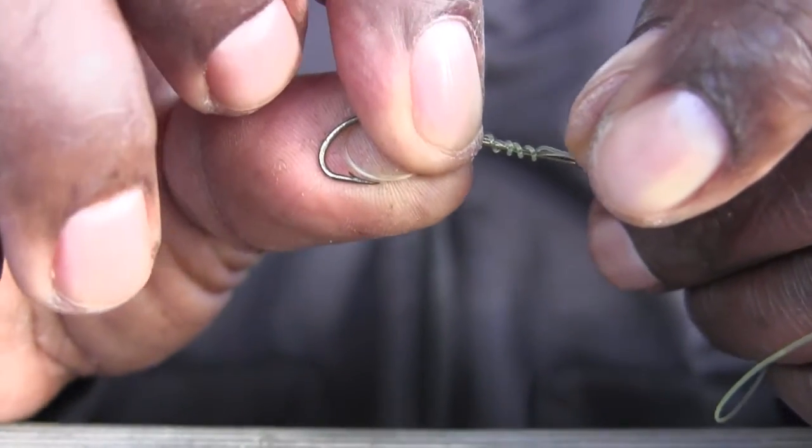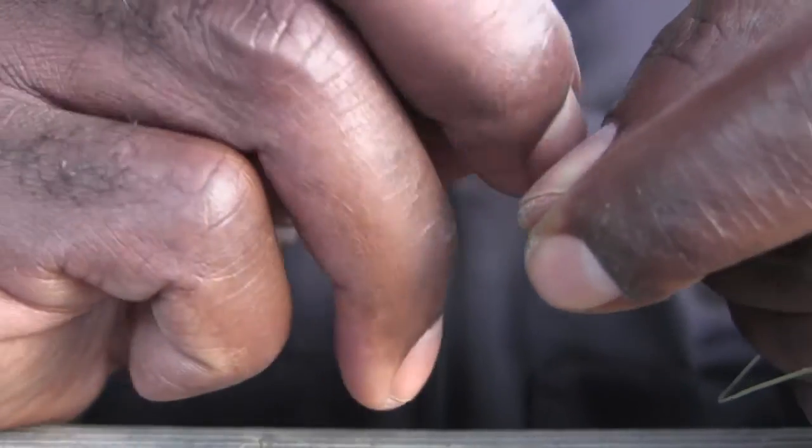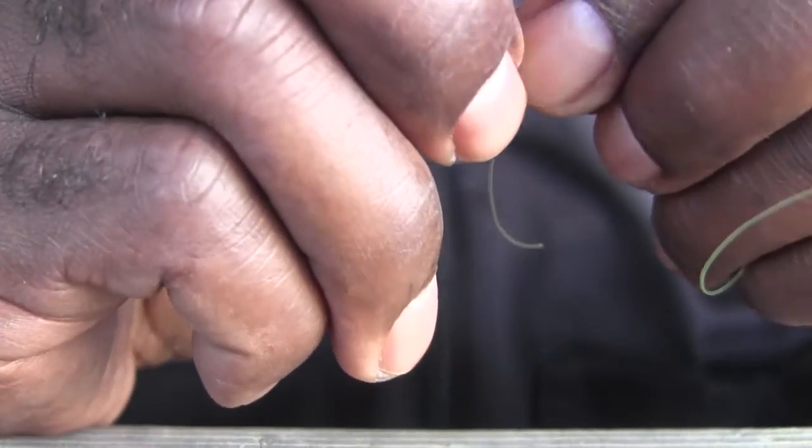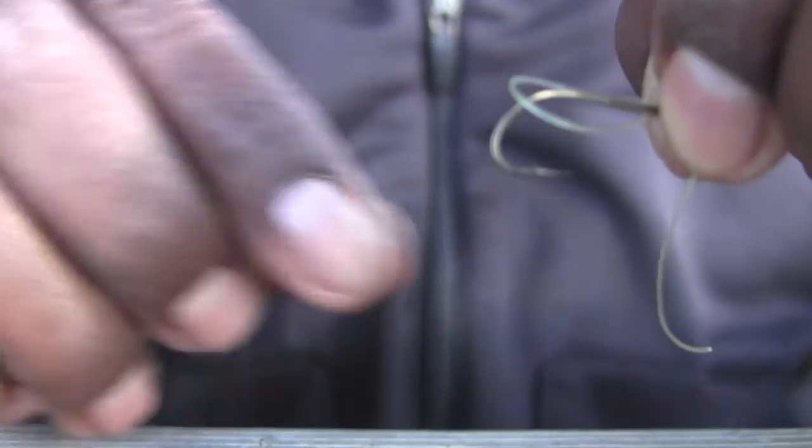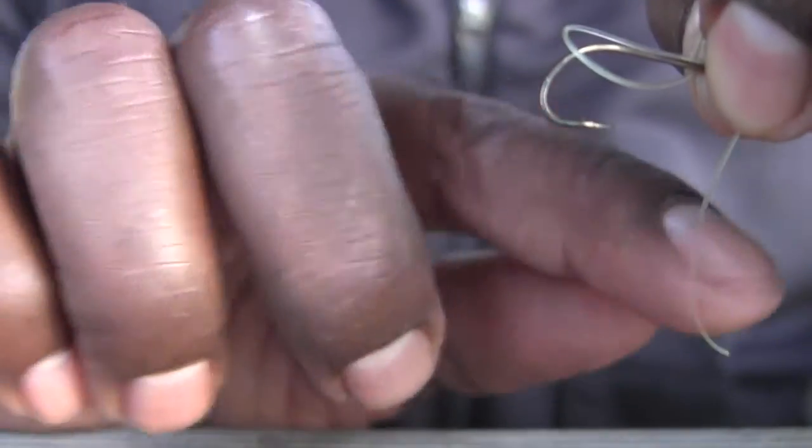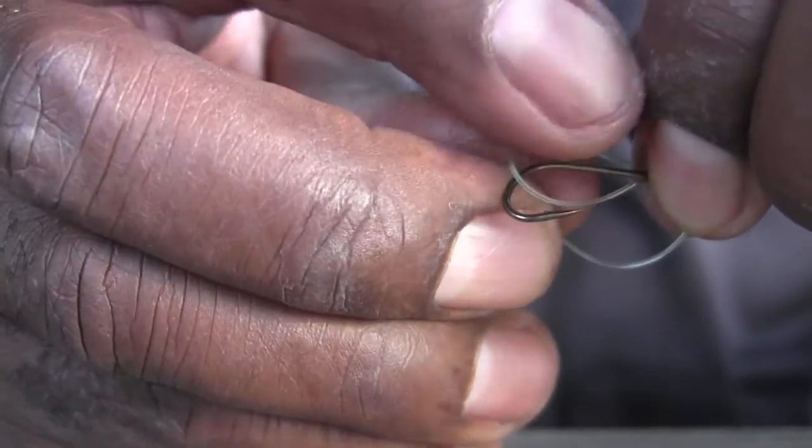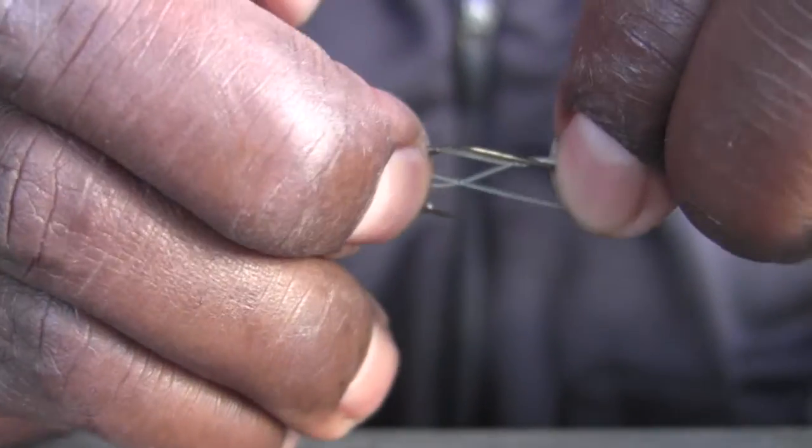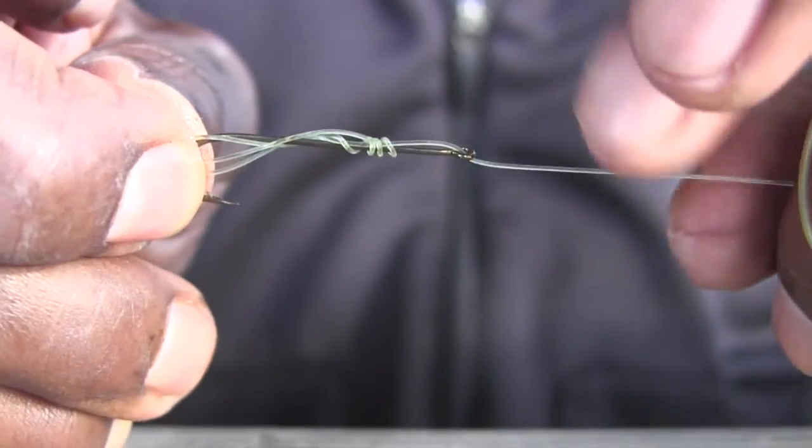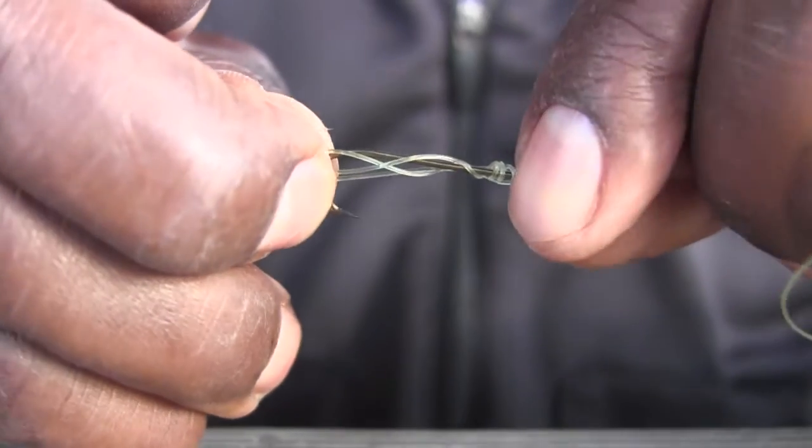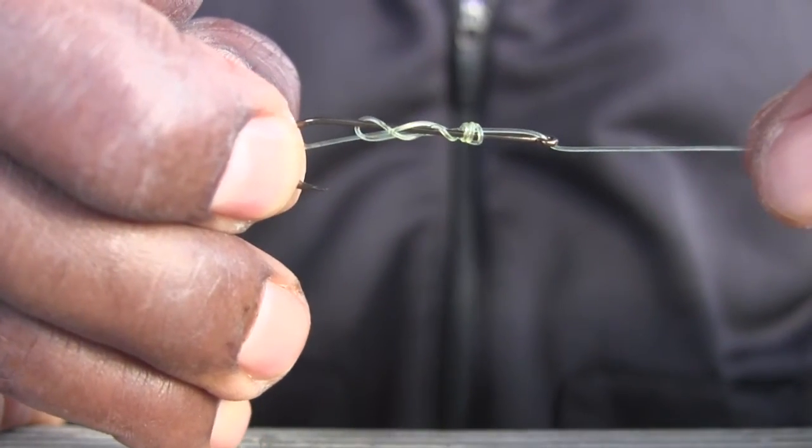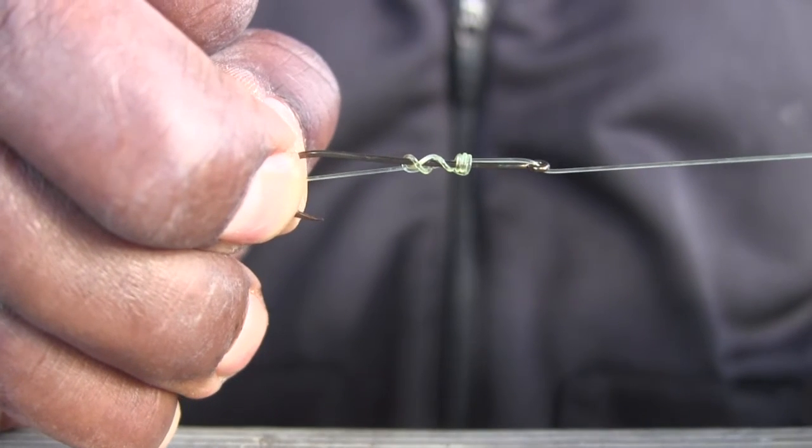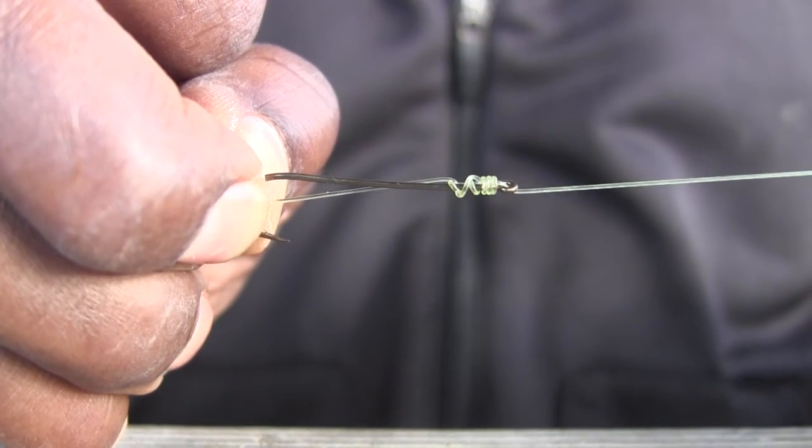So there are our wraps. Our coils. We're going to hold all of that in place so everything doesn't unravel on us. We're going to take our tag end here and go right through our loop. Just like that. And this end here that's on our main line, we're going to pull. Just like that. Pull that nice and tight.